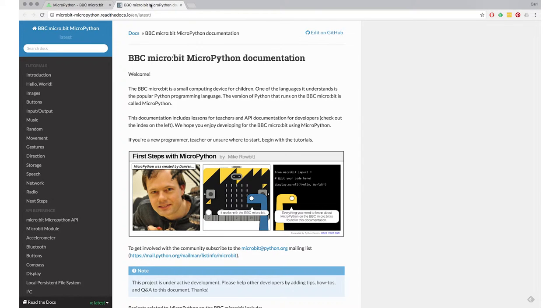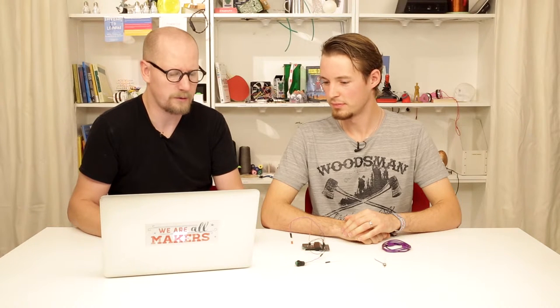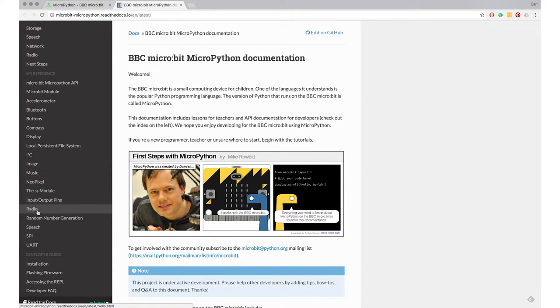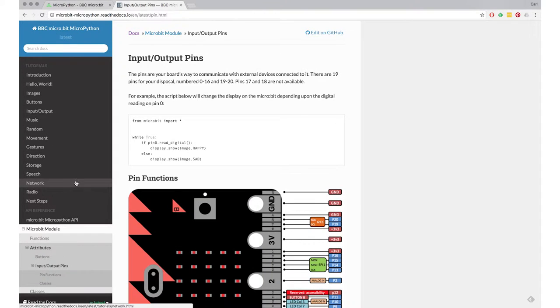Here there's different types of documentation—there's tutorials and reference material below. The reference material lists all the different functions you can find for all different parts of the micro:bit. Here I found Input Output Pins. Let's go there. Here directly there's this read piece of code that seems correct: if pin zero is read digital.